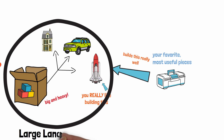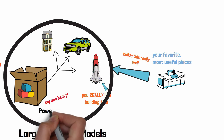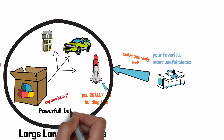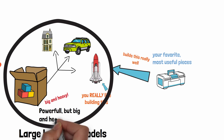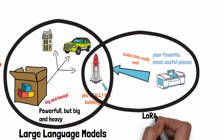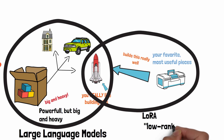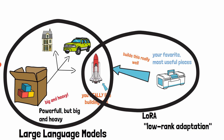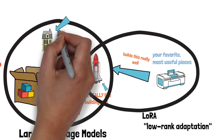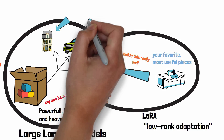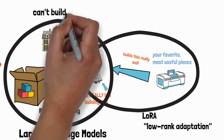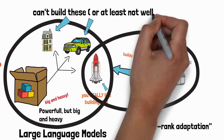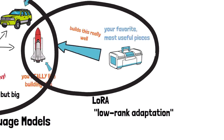In this analogy, the giant box of Legos is like a large language model — for example, GPT-4. It's powerful and can do lots of things, but it's also big and heavy, requiring a lot of computational resources to use. The smaller box of Legos is like a low-rank adaptation of the large language model: a smaller, lighter version of the model that's been adapted for a specific task. It's not as powerful as the full model, but it's more efficient and easier to use.